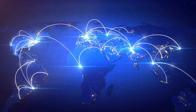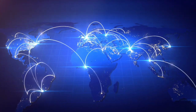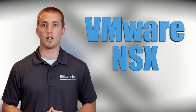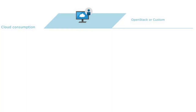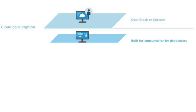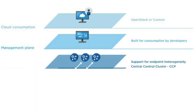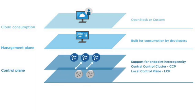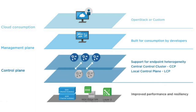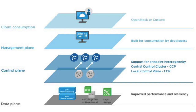VMware has taken even more steps to bring NSX to heterogeneous or non-VMware environments. VMware NSX-T version 1.1 is the next evolution of the VMware multi-hypervisor virtual networking product, allowing organizations running hybrid or non-VMware hypervisors to take advantage of VMware NSX.